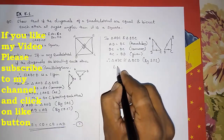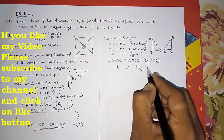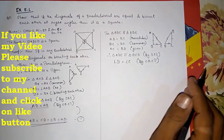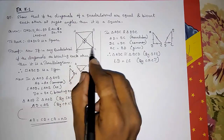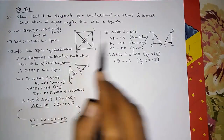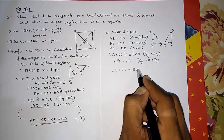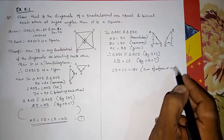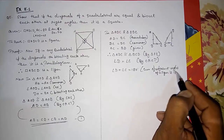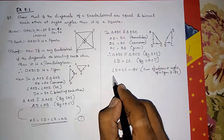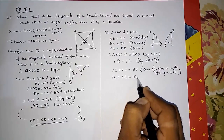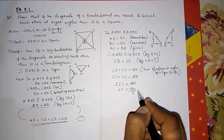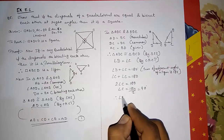From the congruent triangles, angle D equals angle C by CPCT. Now, we know that the sum of adjacent angles of a parallelogram is 180 degrees. Since angle D equals angle C, we can write: angle C plus angle C equals 180 degrees, so 2 times angle C equals 180 degrees, giving angle C equals 90 degrees. Therefore angle D is also 90 degrees.